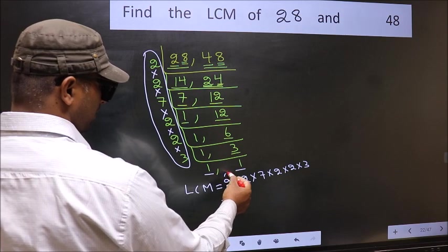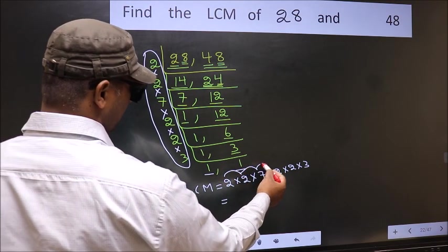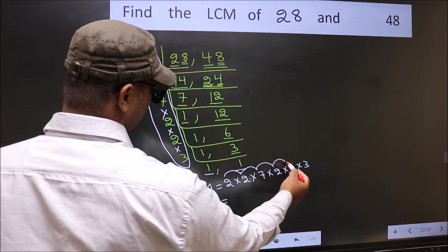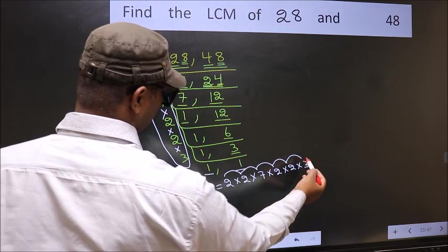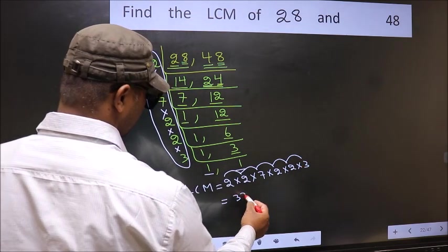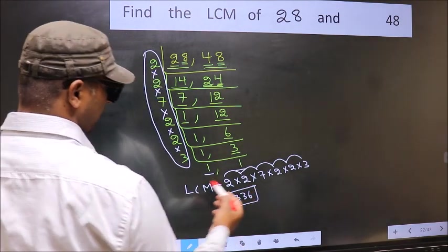2 into 2 is 4. 4 into 7 is 28. 28 into 2 is 56. 56 into 2 is 112. 112 into 2 is 224. 224 into 3 is 336. 336 is our LCM.